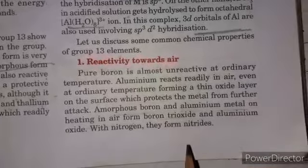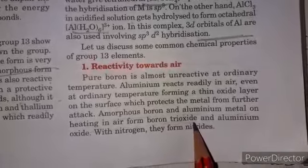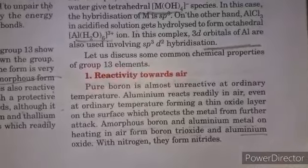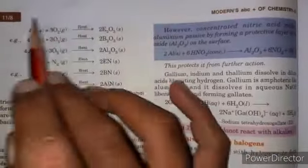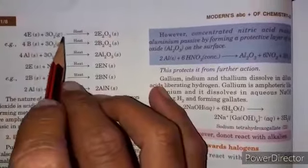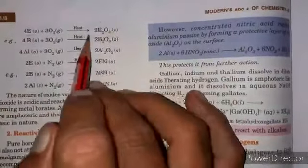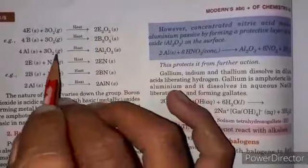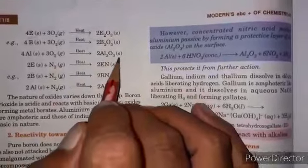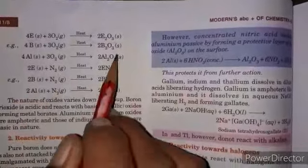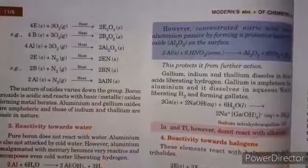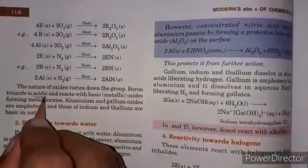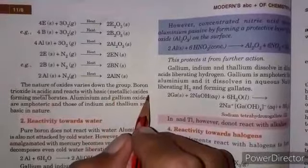Amorphous boron and aluminum metal on heating in air form boron trioxide and aluminum oxide. When they heat with nitrogen they form nitrides. When four molecules of any element of Group 13 react with oxygen upon heating it forms E2O3. With nitrogen they form nitrides. The nature of their oxides varies down the group. Boron trioxide is acidic and it reacts with basic metallic oxides.